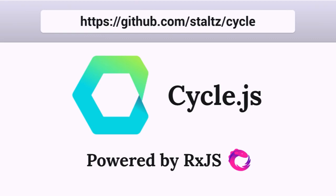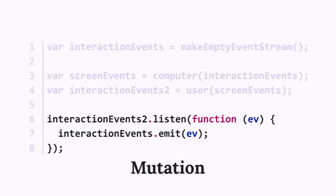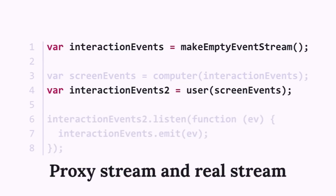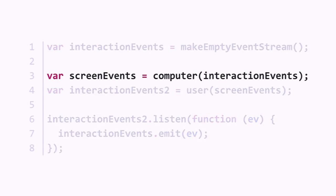This is roughly what my framework called Cycle.js does. You can find it at that address, and the event streams it uses come from the library RxJS. Cycle.js solves problems with the code we wrote: the boilerplate of declaring the empty stream, the mutation, and having two event streams representing the same thing — one proxy, one real, attached to each other. You just want to specify as a programmer how the computer works in the user interface. That's what Cycle allows you to do — specify one function, and it does the rest of the loop for you.